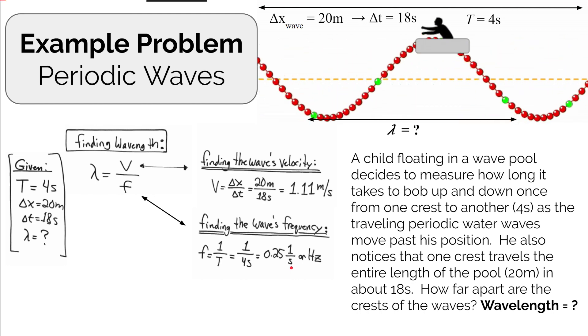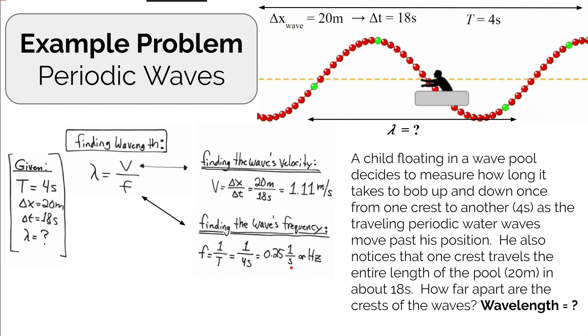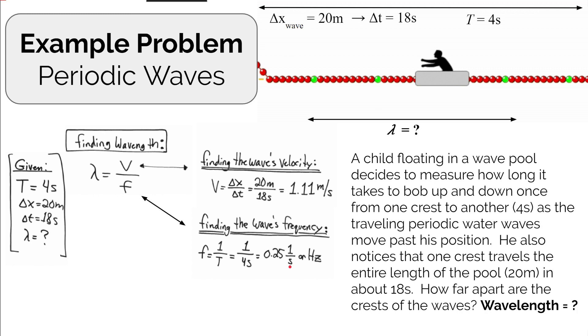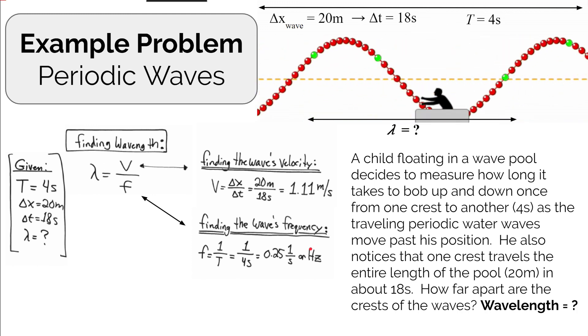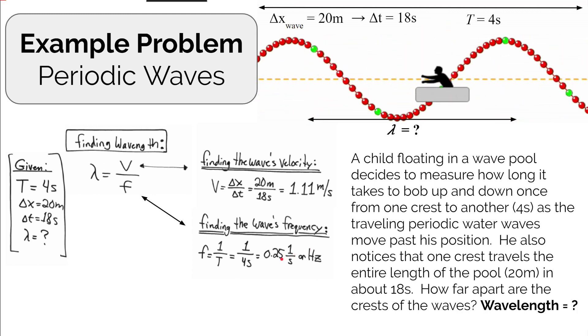An inverse second is the same thing as a cycle per second, which is our unit for frequency, or hertz. So the frequency of the periodic wave with a period of four seconds is about a quarter of a hertz.